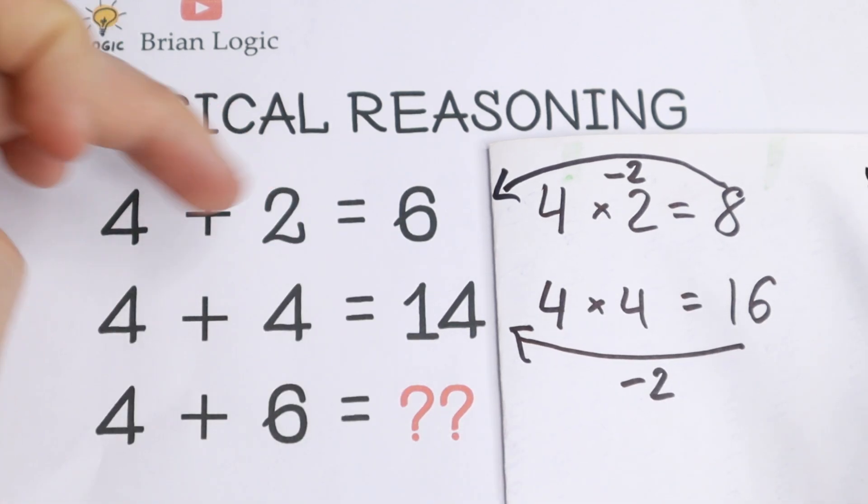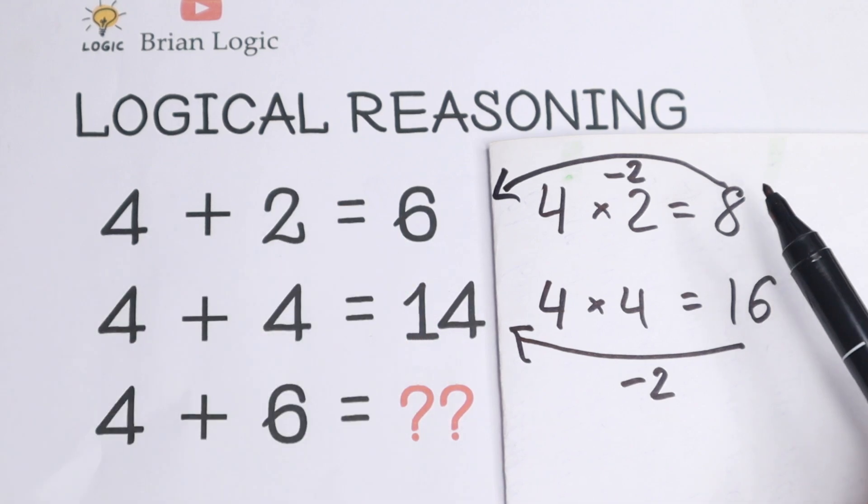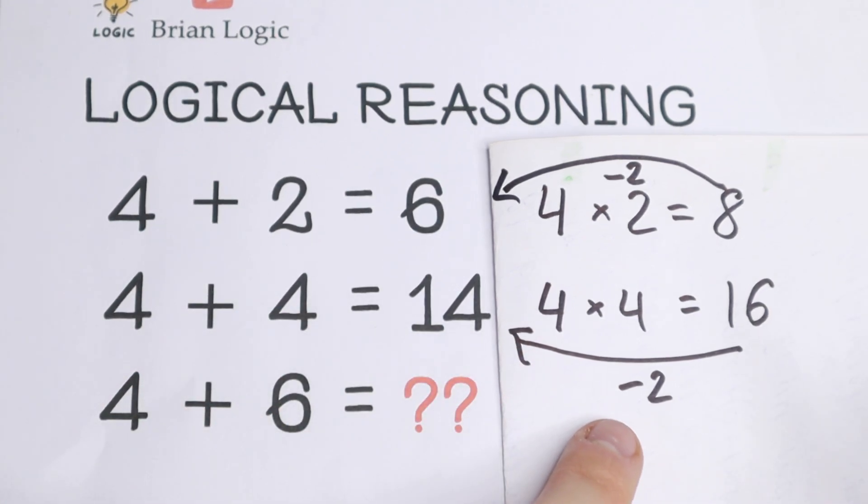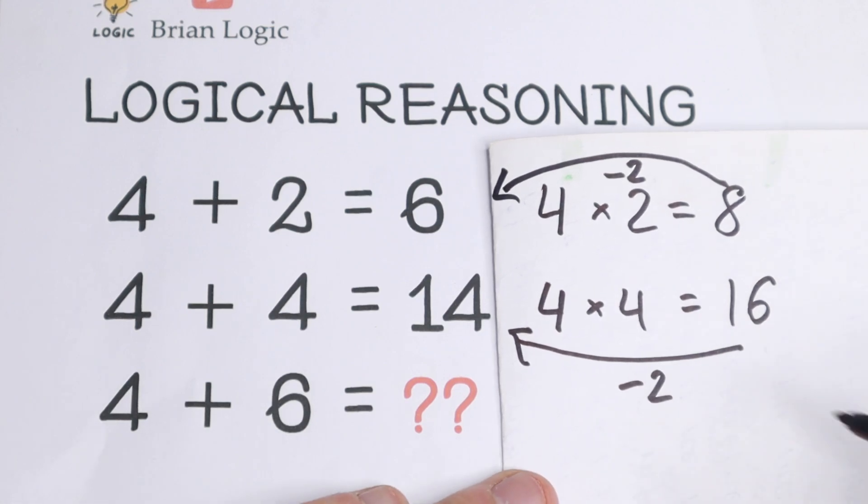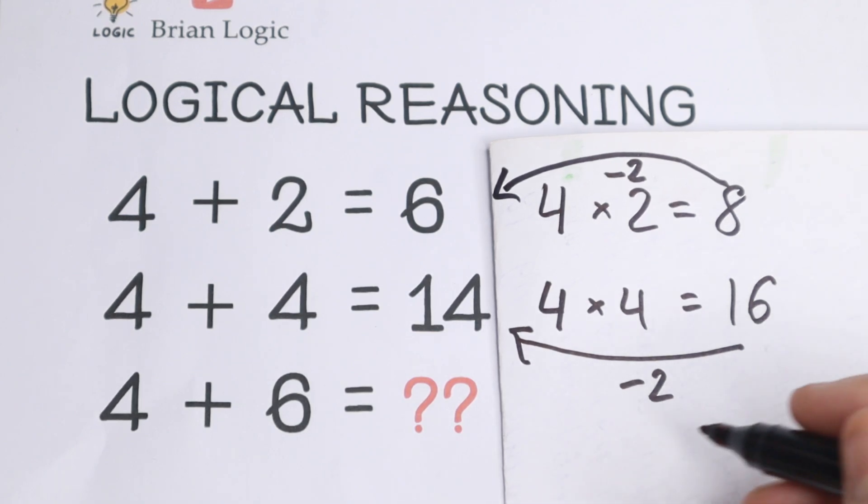So right here, multiplying these two numbers, and in the end, subtract from this value 2. Right here, multiplying these two numbers, and subtract 2 as well. So as you can see, 16 minus 2 will be 14, and 8 minus 2 will be 6. So let's use this logic. Maybe we will have this option in the end.